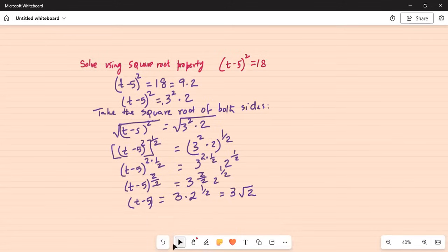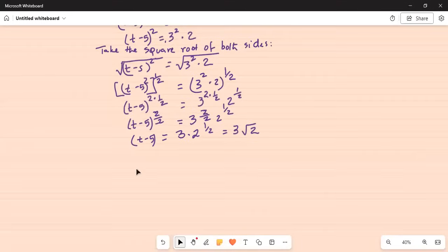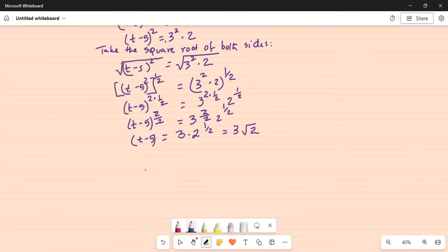Now let's create some space and we will have to isolate the t from the 5. So it is t minus 5, so we do the opposite, plus 5 on both sides.